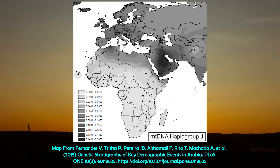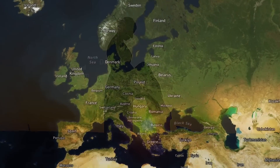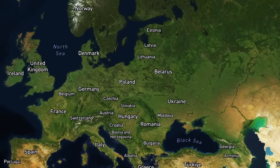Other mitochondrial haplogroups in Southeast Europe worth noting are GI at between 8 and 12%, T at a similar level, and K at around 5-10%.